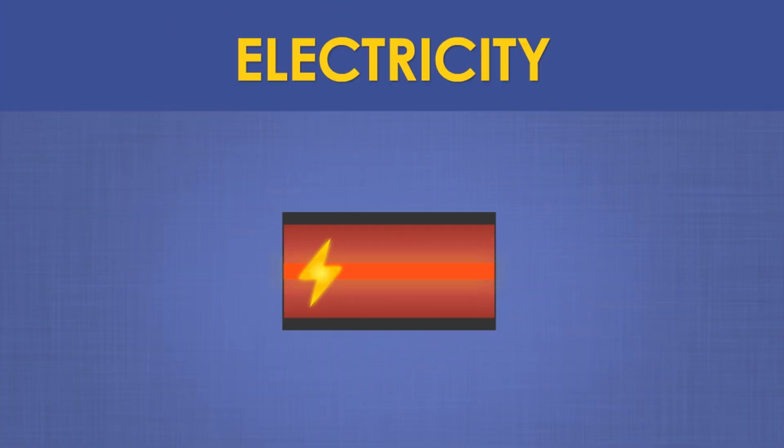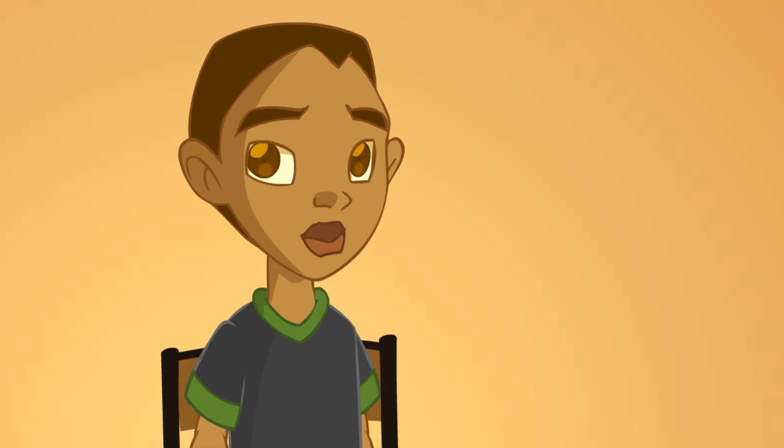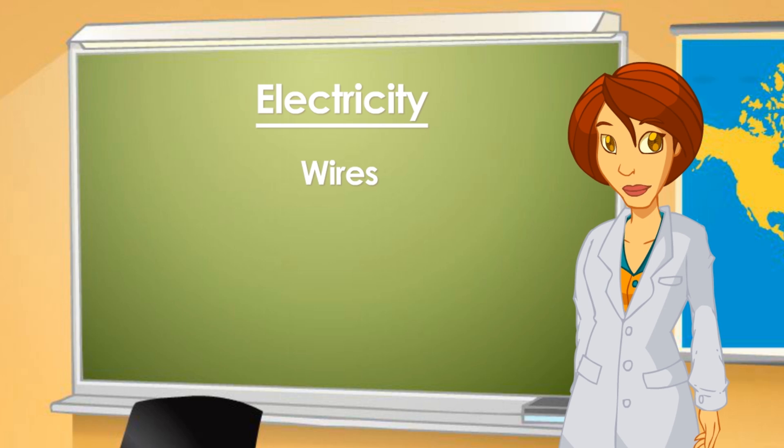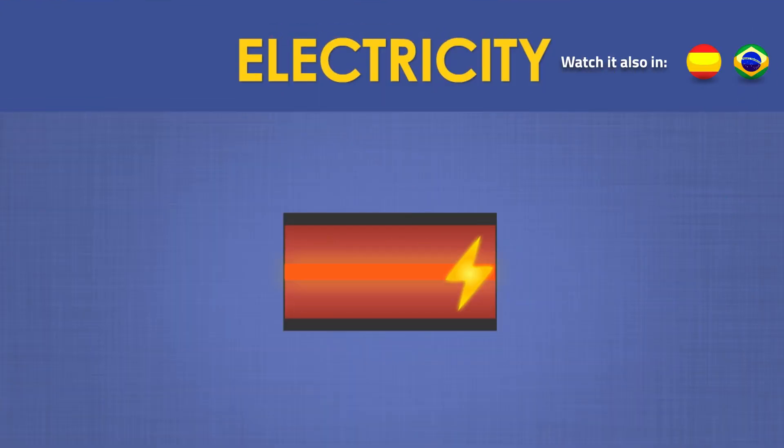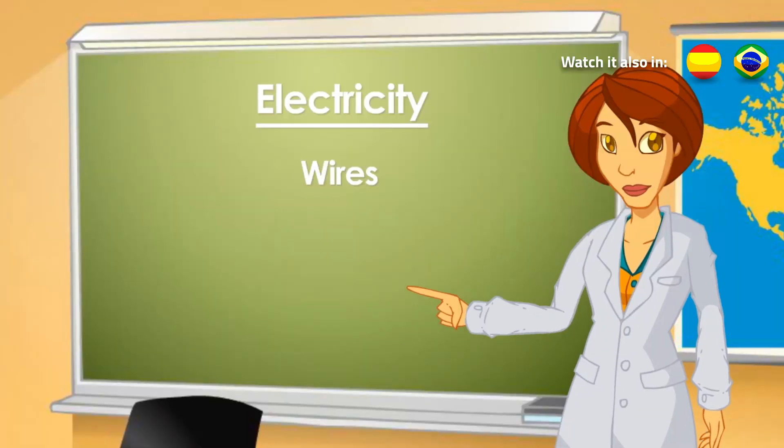And a material that doesn't conduct electricity, the rubber part on the outside. And the rubber they have doesn't allow electricity to escape? That's it! Because rubber and plastic don't conduct electricity, and therefore, electricity has no option but flowing through the metal conductor that is inside the wire. That's why the rubber covering the wires is called an insulator, because it keeps electricity inside the wire and prevents it from escaping.